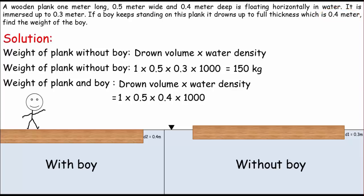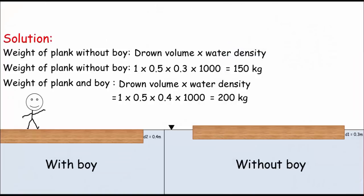Times the density of water, which is 1000 kilograms per cubic meter. And by multiplying these four, we get the weight of plank and boy equals 200 kilograms.